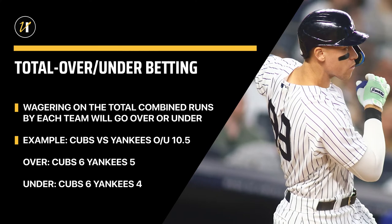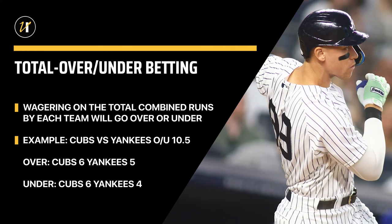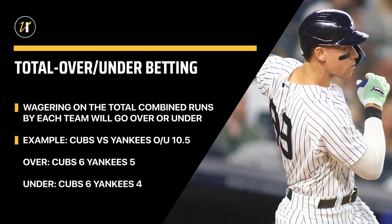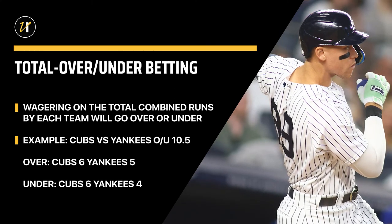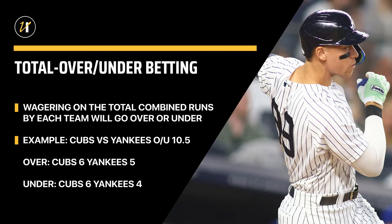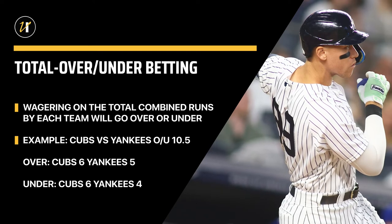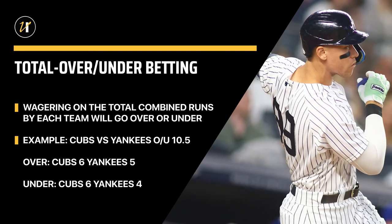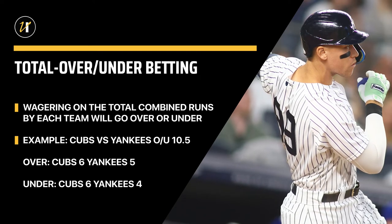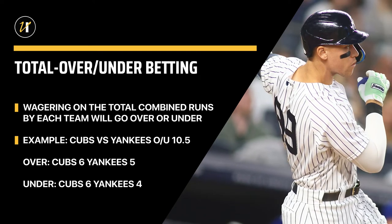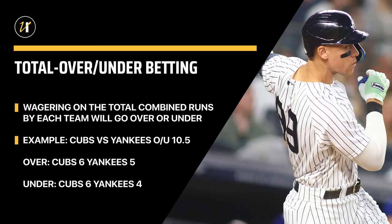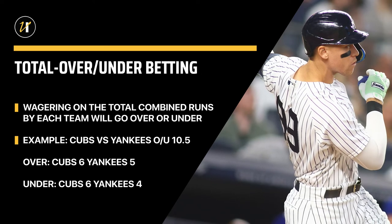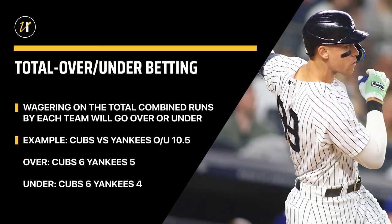So for example, a game between the Cubs and Yankees might have a set total of 10 and a half runs. If the Cubs go on to win that game 6 to 4 for a total of 10 runs, it would mean it went under the total of 10 and a half runs set by the odds maker.